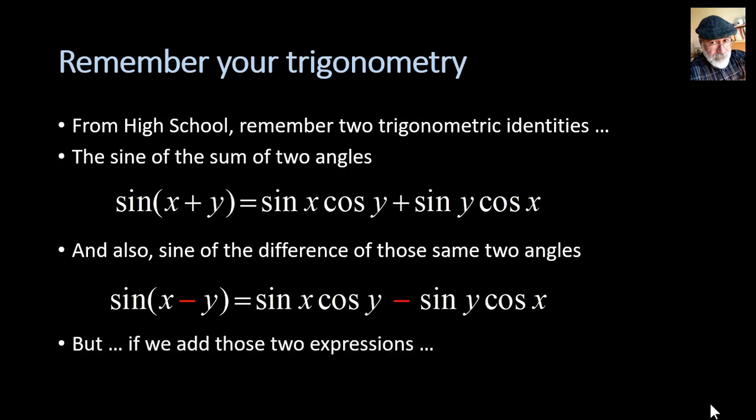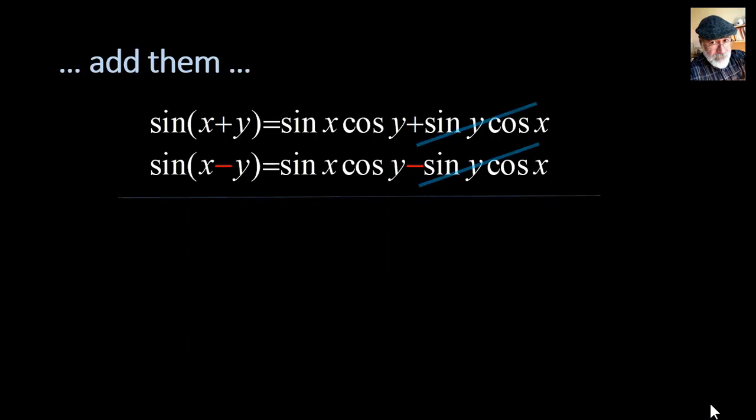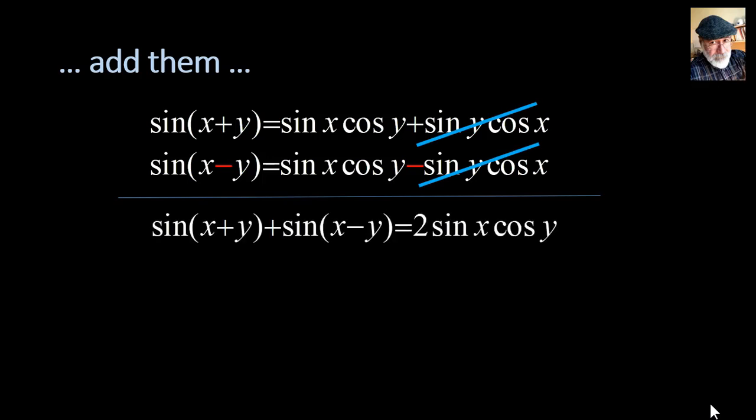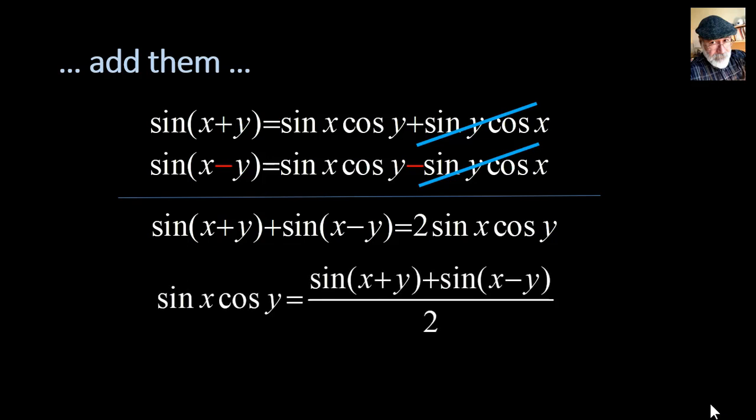If we add them together, look what happens. The terms on the right cancel out and we get this expression. But what we care for is the product sine x cosine y. Sine x cosine y is one half of the sum of the sine of the sum plus the sine of the difference of the angles x and y. That is the formula that we will need at the end of this session.